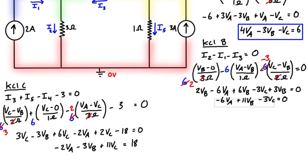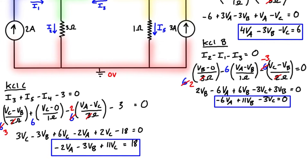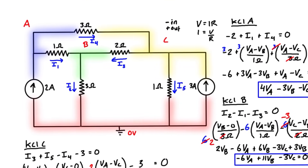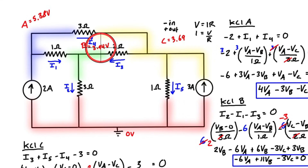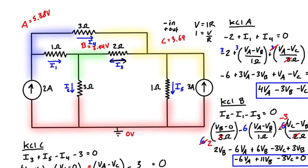We now have three equations with three unknowns. You can either use back substitution or set up an augmented matrix to solve for VA, VB, and VC. We label those values back on the original diagram. Note that i3 needs its direction corrected — it was drawn flowing from a lower voltage to a higher voltage, which doesn't happen across resistors, so we flip its arrow to point the other way.